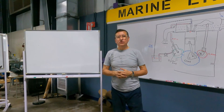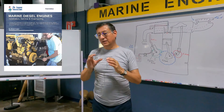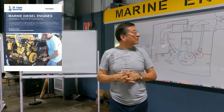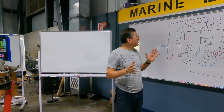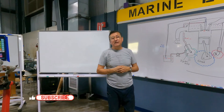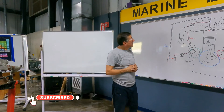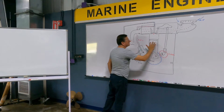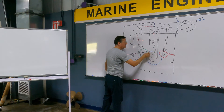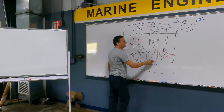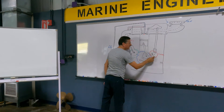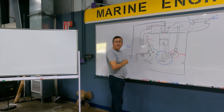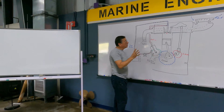Today we are going to continue with the combustion chamber and the head. We are going to start checking this diagram that I prepared — this schematic about a diesel engine. This is the block, this is the piston, this is the crankshaft, this is the gear of the crankshaft, this is the camshaft and the gear of the camshaft, this is the fuel injection pump and this is the gear of the fuel injection pump.